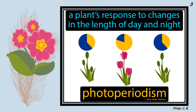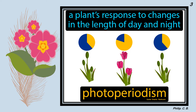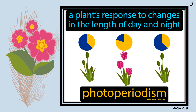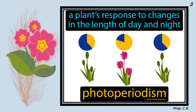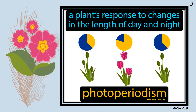Moving further, there is a simple image showing a plant's response to changes in the length of day and night. As we will learn, photoperiodism refers to how plants bloom depending on their response to light during the day and night. Depending on the light present, the growth and flowering of the plant takes place.